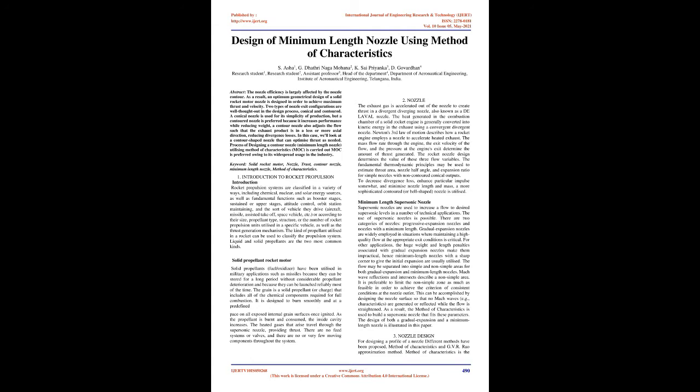A conical nozzle is used for its simplicity of production, but a contoured nozzle is preferred because it increases performance while reducing weight. A contour nozzle also adjusts the flow such that the exhaust product is in a more axial direction, reducing divergence losses.